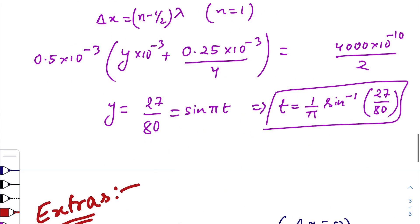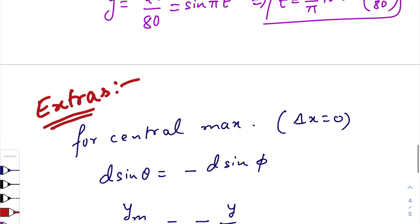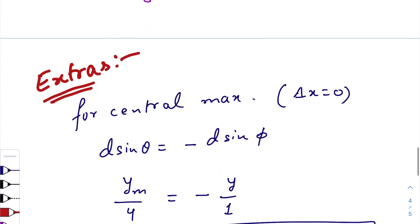Now let us do a small extra thing. Now see, if we want to find out the motion of the central maxima, then path difference should be 0. Then d sine theta should be equals to negative d sine phi.